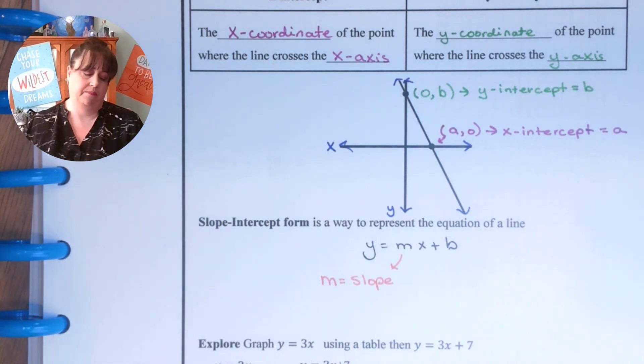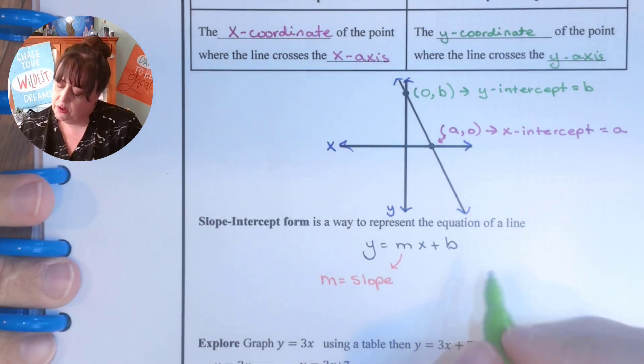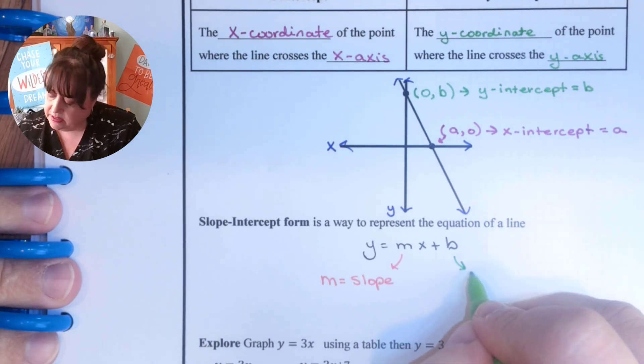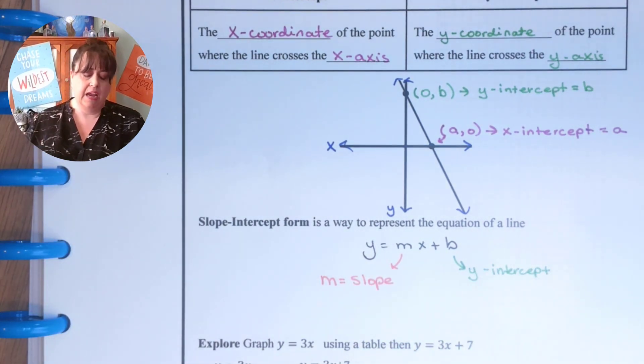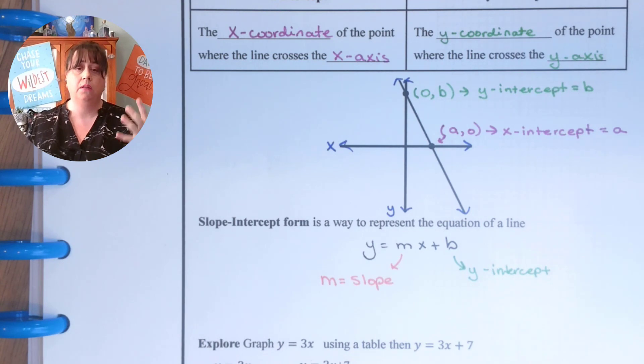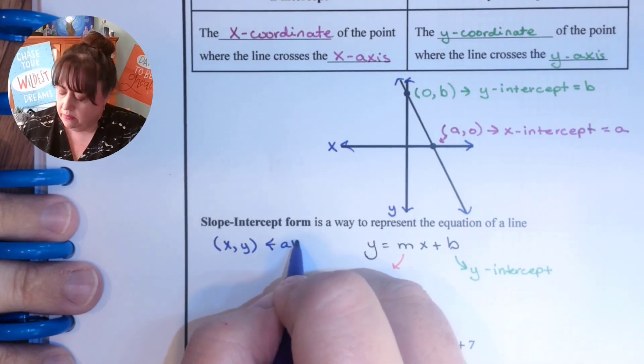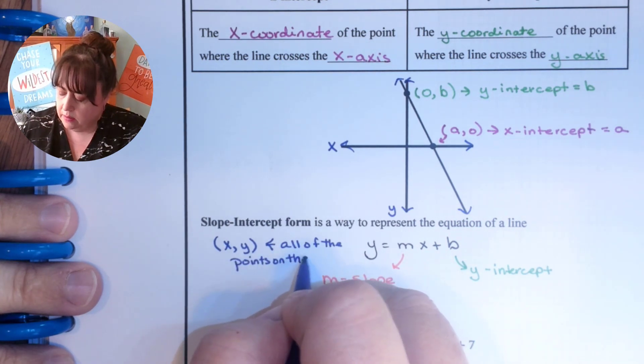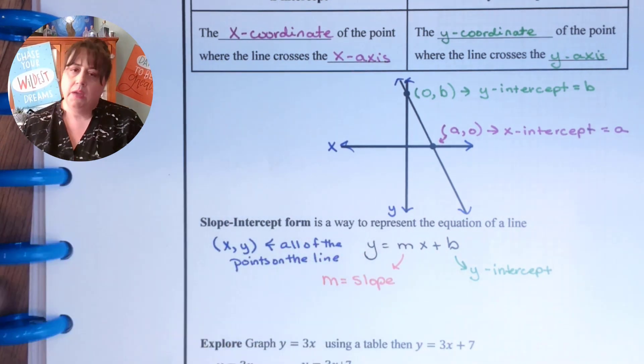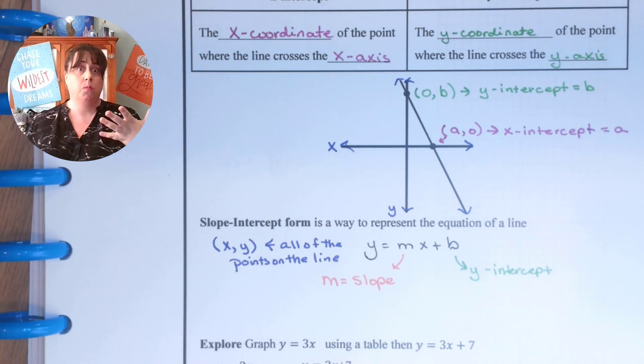I know you already know that one because we've used it so much. b you just learned. b is the y-intercept. And then x and y are points on the line. They are going to stay x and y always. We're only replacing m and b. So x and y are all of the points on the line. So they have to stay the variables x and y.